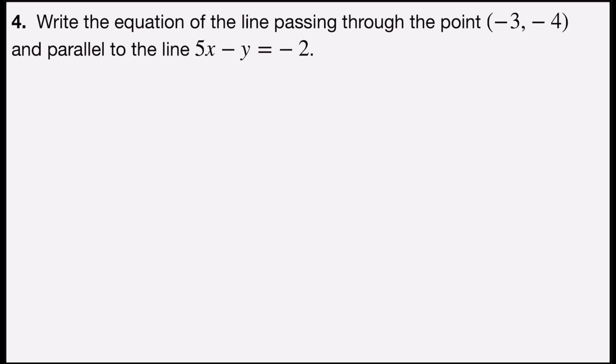Problem number four says, write the equation of the line passing through the point (-3, -4) and parallel to the line 5x - y = -2.